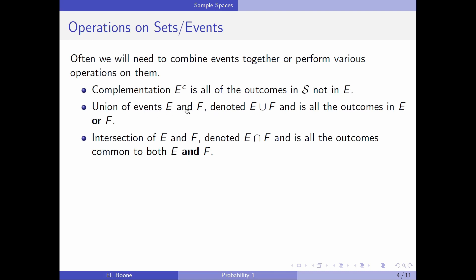A union is E, if we have two sets, then it's all the outcomes in E or F, and it's represented by this U here, where the complement is represented by this C.